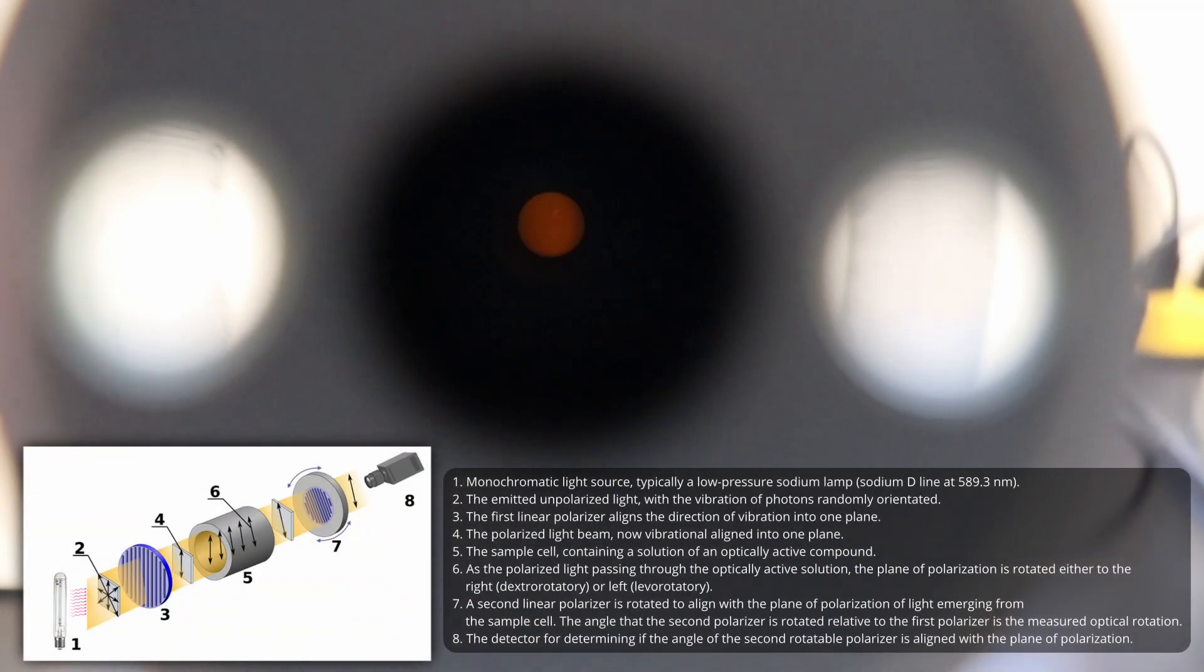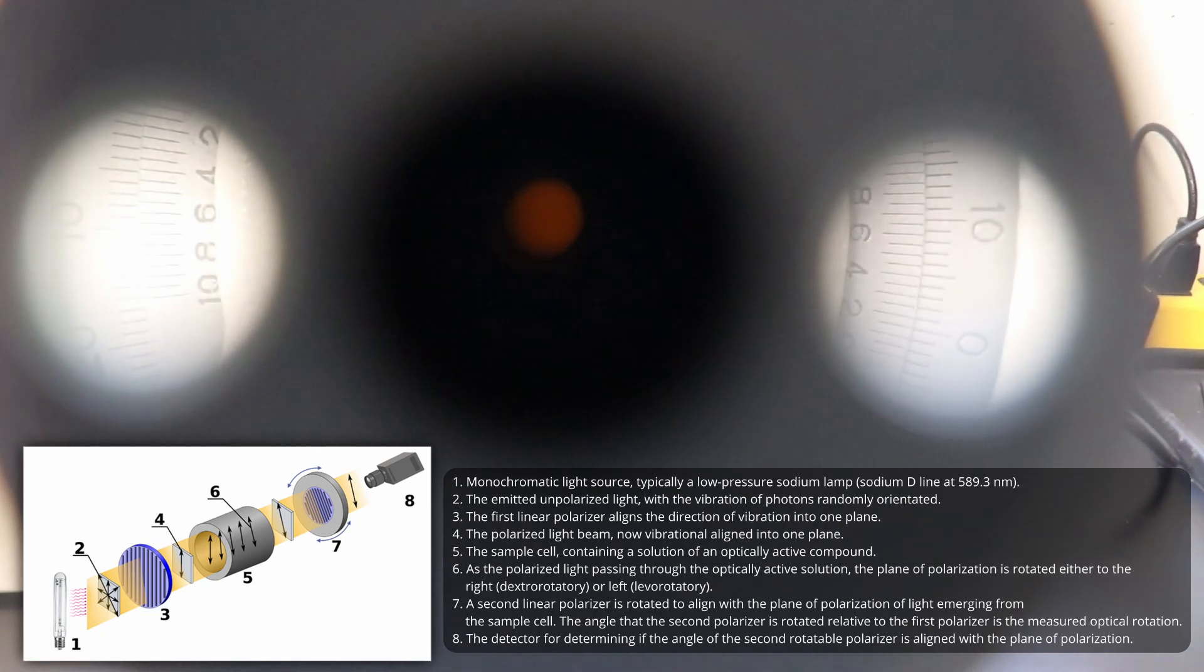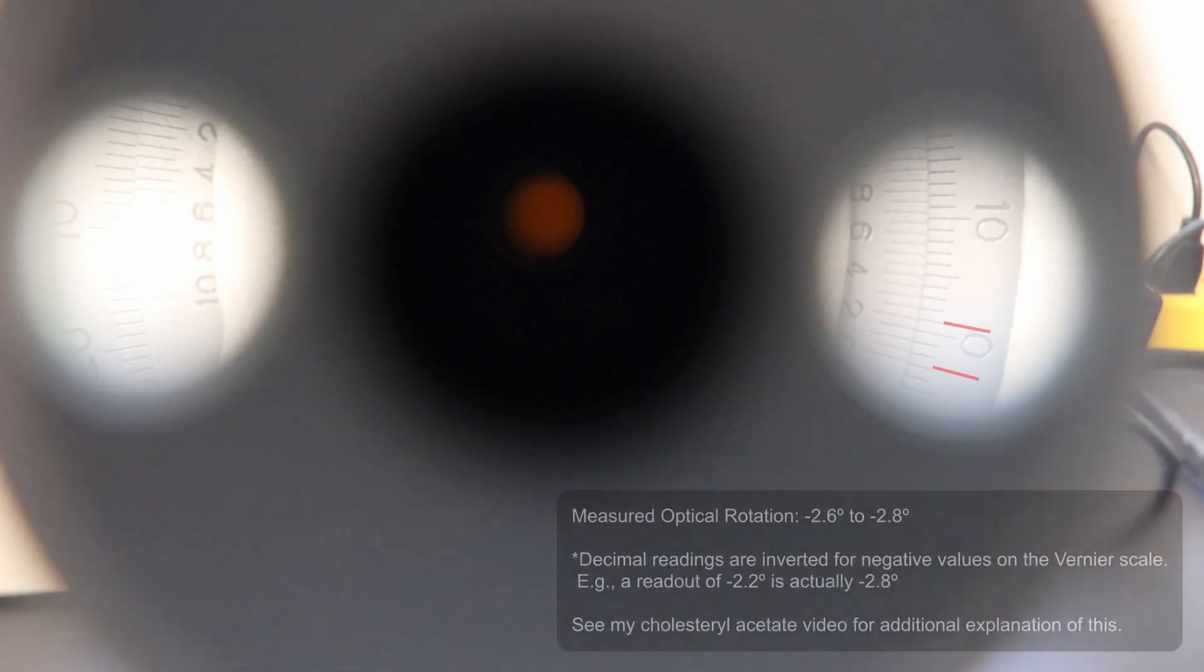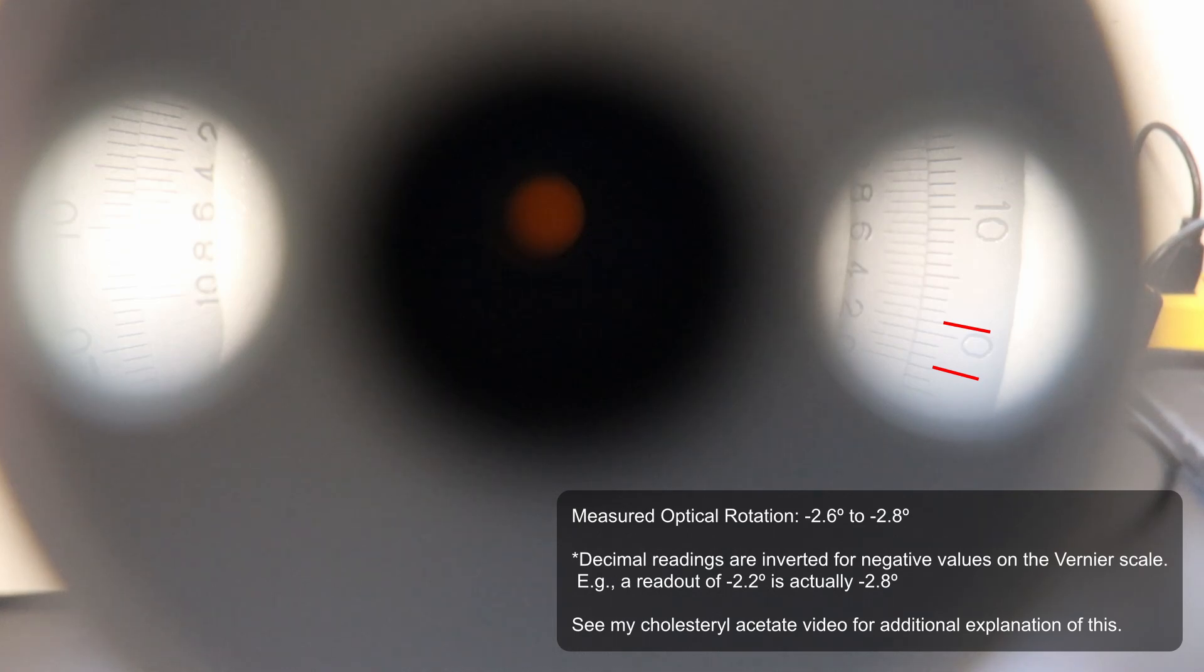At this point, the rotatable polarizer is now aligned with the direction of polarization of the light that is exited from the solution. And as such, the relative angle between the first polarizer and the second rotatable polarizer is the measured optical rotation of the sample.